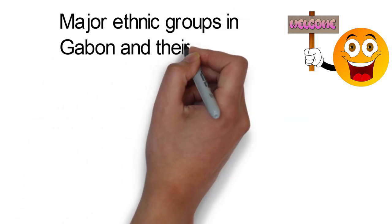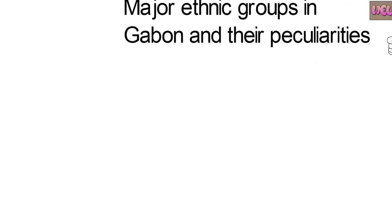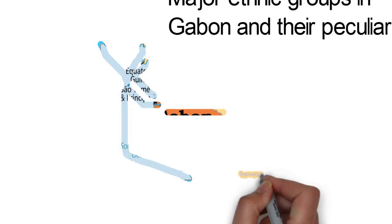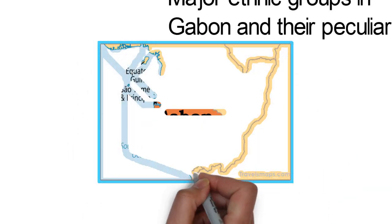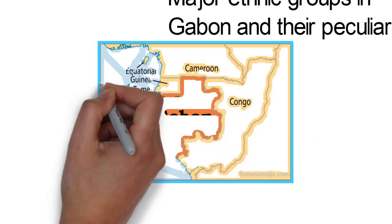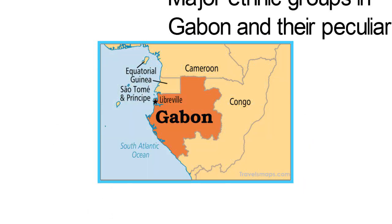Major Ethnic Groups in Gabon and Their Peculiarities. The Central African country of Gabon is one of the multi-ethnic countries on the African continent. Here are the major ethnic groups in the country and their peculiarities.